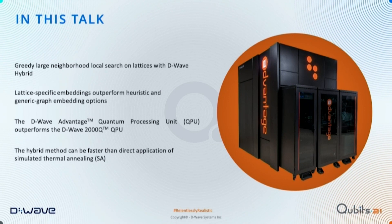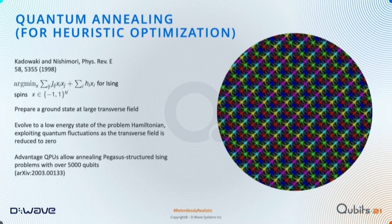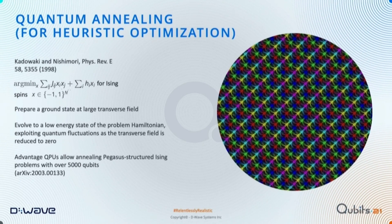Everyone here knows a little bit about quantum annealing. In this talk the quantum processing unit is used as an annealer in a standard workflow. We have a binary quadratic model or Ising model as shown mathematically. We prepare the wave function in uniform superposition, then gradually turn on the energy landscape associated with the optimization problem. During the anneal we search the landscape by quantum fluctuations, which are gradually removed, and at the end we decohere in a classical state measurable as an approximation to the ground state.